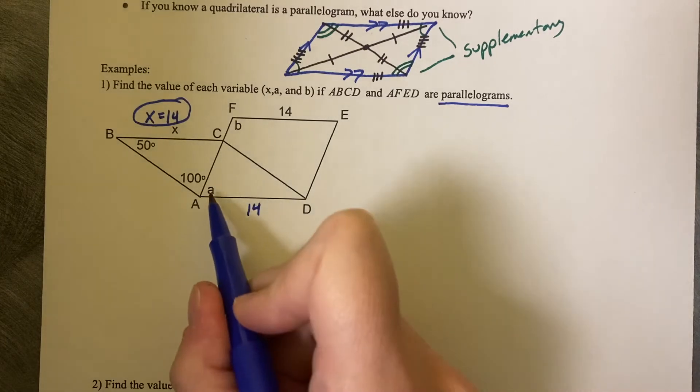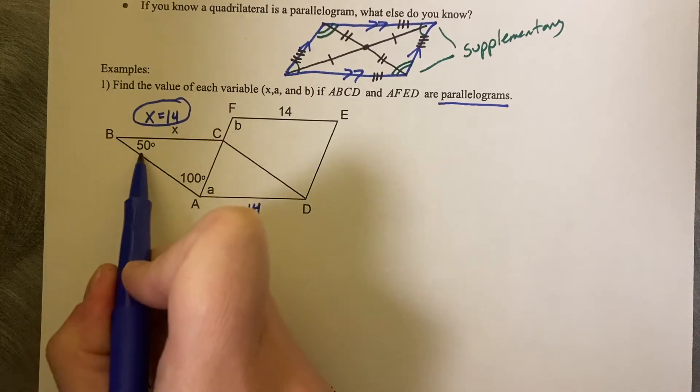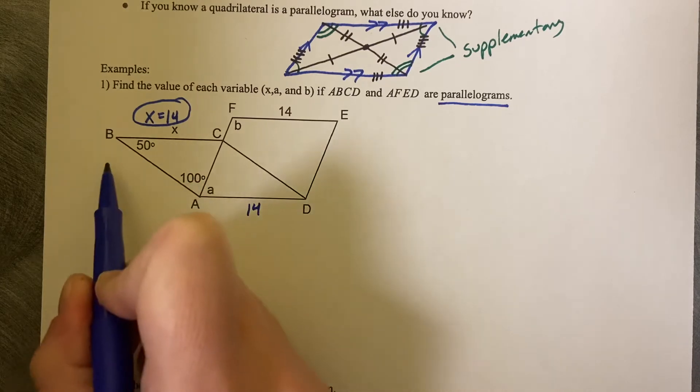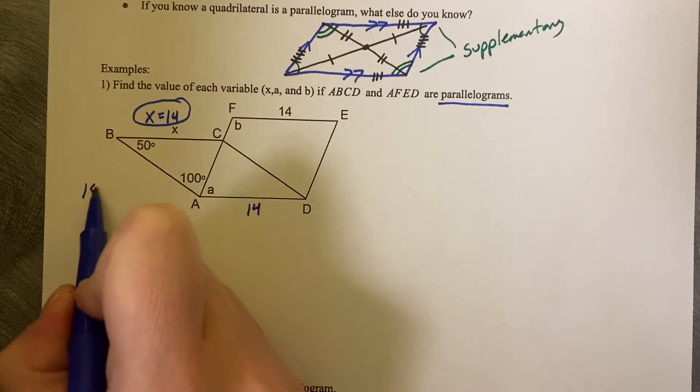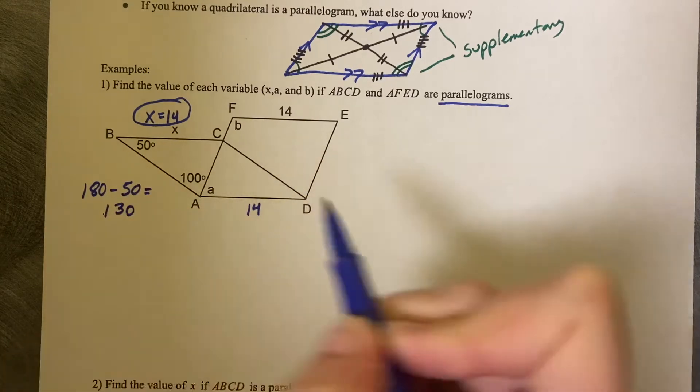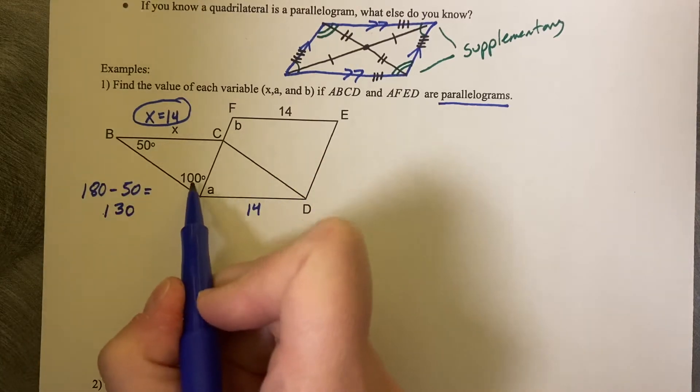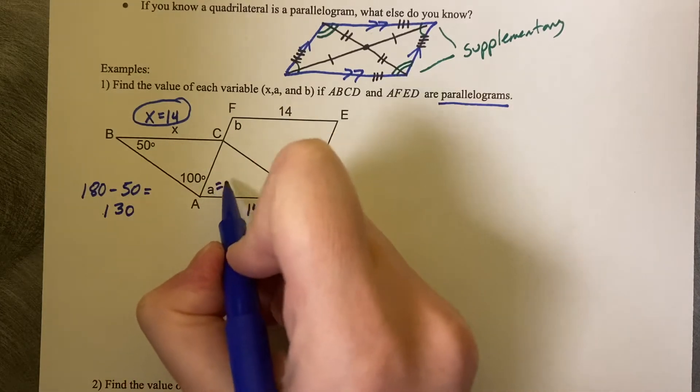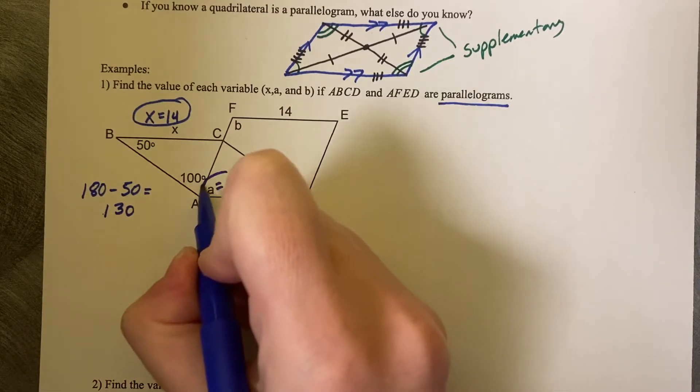Then we want to find the measure of angle A. So if this measure is 50, I know that the total sum of this corner angle is going to be supplementary. So 180 minus 50 is 130. And if this length, or if, I'm sorry, not this length, but this angle measure is 100, that means that angle A will be 30 degrees.